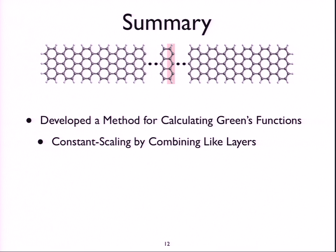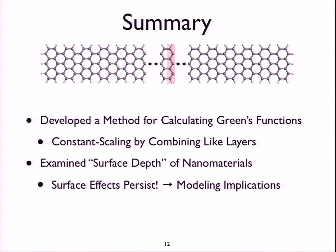And so there's kind of a summary. What we've done here is develop this method for calculating Green's functions and basically use this matrix Mobius transformation to make it constant scaling by combining all of these layers and using this nearly block toeplitz structure that people hadn't been using in the past. And with that, we can then start to look at the surface depth of nanomaterials and find that surface effects persist, which is really nice in one sense because we now have a way to look at them. We could not have gotten these guys onto even Jaguar running NW Chem using anything other than a really cruddy level of theory and a really bad basis set, if that was even possible.